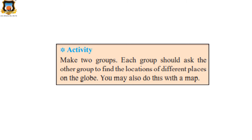Here is an activity: make two groups. Each group should ask the other group to find the location of different places on the globe. You may also do this with a map. Since we are all sitting at home, we can't make groups, but you can do this with your parents or siblings. One side will be your mother, one side your father, and you will ask each other to find different places on the globe. If you don't have a globe at home, you can use the map.